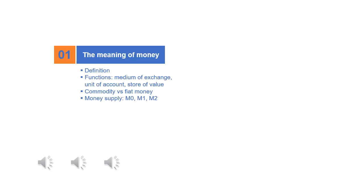Therefore the first and most important function of money is as a medium of exchange. You exchange your money for goods and services you'd like to purchase from sellers. How much do you have to exchange? It depends on the value of the goods and services you would like to buy. That value is expressed in terms of price, and the price itself is expressed in terms of money. In this regard, money functions as a unit of account.